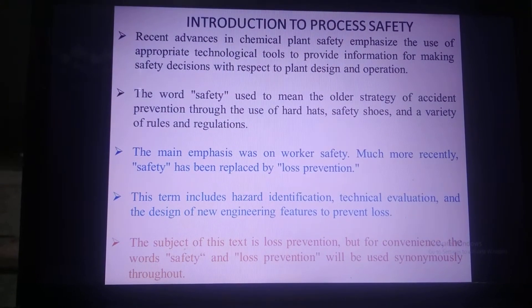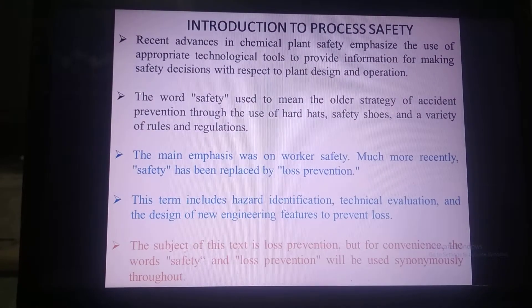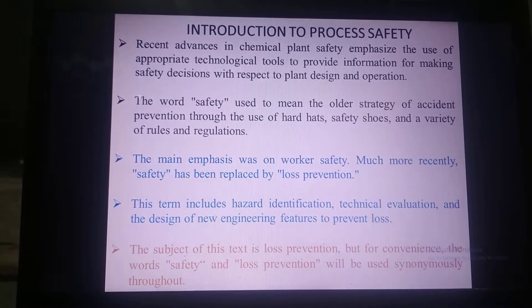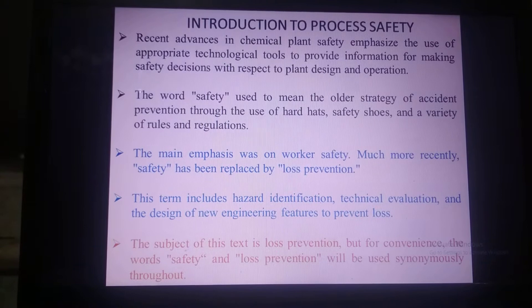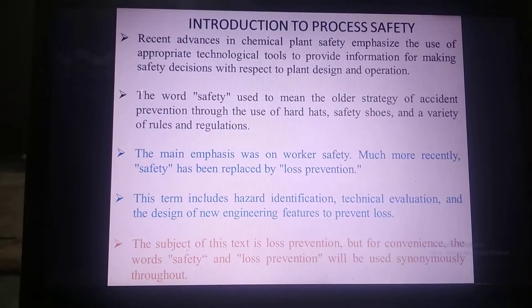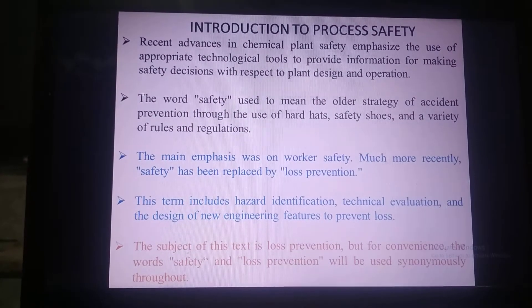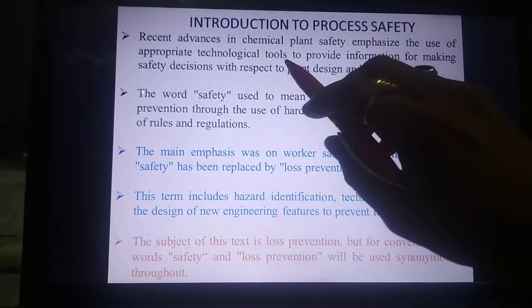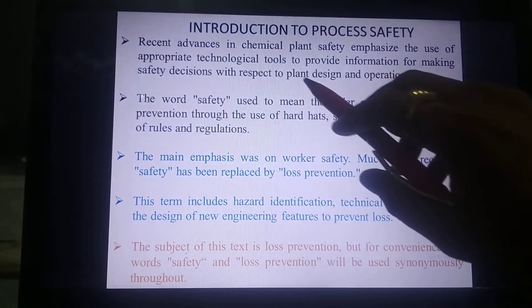Safety is the integral part of any chemical processing industry because it deals with the economy of that particular plant or process. The recent advances in chemical plant safety emphasize the use of appropriate technologies and tools to provide information for making safety decisions with respect to plant design and operations.